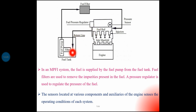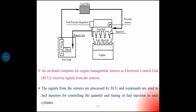Sensors are located at various components and auxiliaries of the engine to sense operating conditions. In the MPFI system, sensors monitor engine speed, accelerator pedal position, coolant temperature, air temperature, and engine load. An onboard computer for engine management — the electronic control unit (ECU) — receives signals from these sensors. The ECU processes the signals and sends commands to the fuel injectors, controlling the quantity and timing of fuel injection in each cylinder.